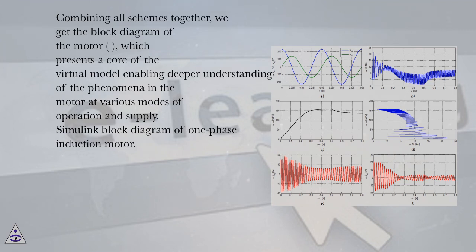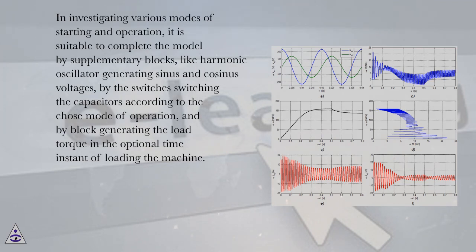Simulink block diagram of one-phase induction motor. In investigating various modes of starting and operation, it is suitable to complete the model by supplementary blocks, like harmonic oscillator generating sinus and cosinus voltages, by the switches switching the capacitors according to the chosen mode of operation, and by block generating the load torque in the optional time instant of loading the machine.